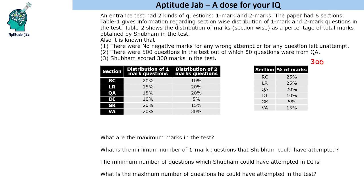There are 500 questions in the test. Let us say there are 100a one-mark questions and 100b two-mark questions. So we get an equation: 100a + 100b = 500. We are also given that 80 questions are from QA. For QA, 15% gives us 15a one-mark questions and 20b two-mark questions, which equals 80.